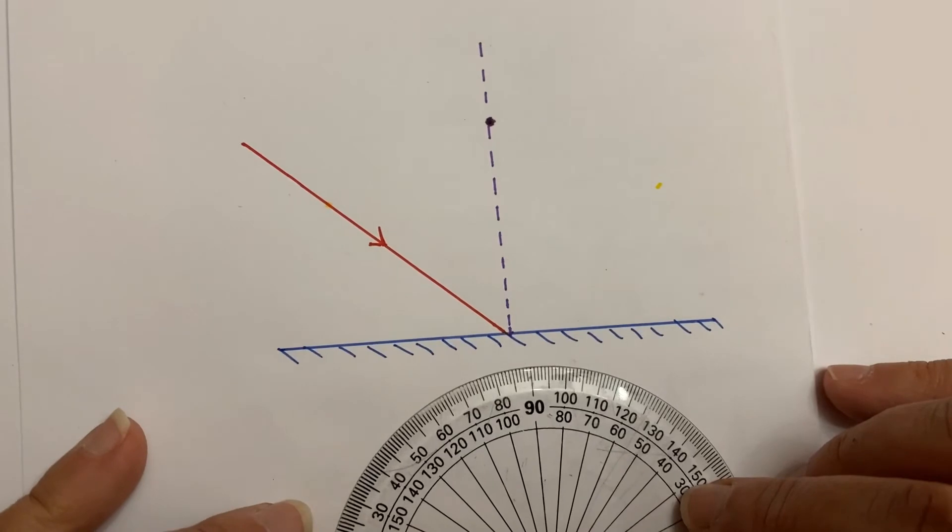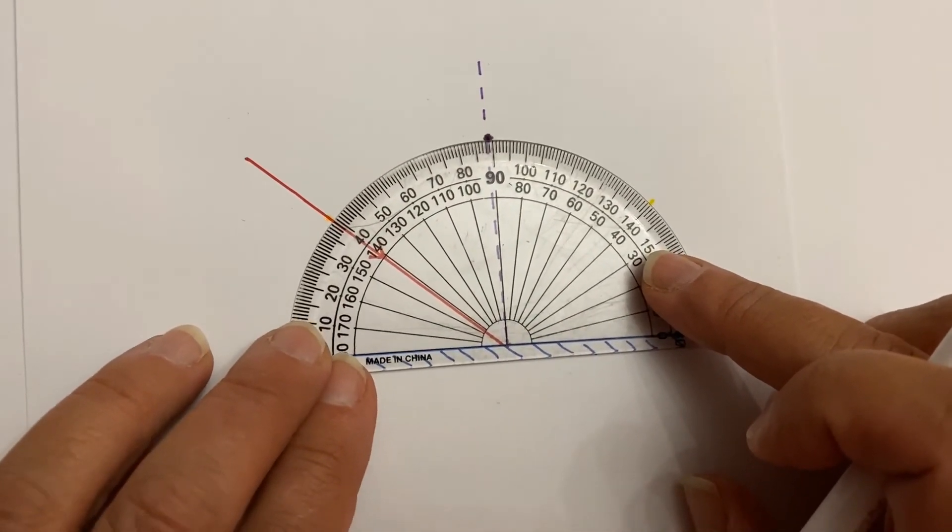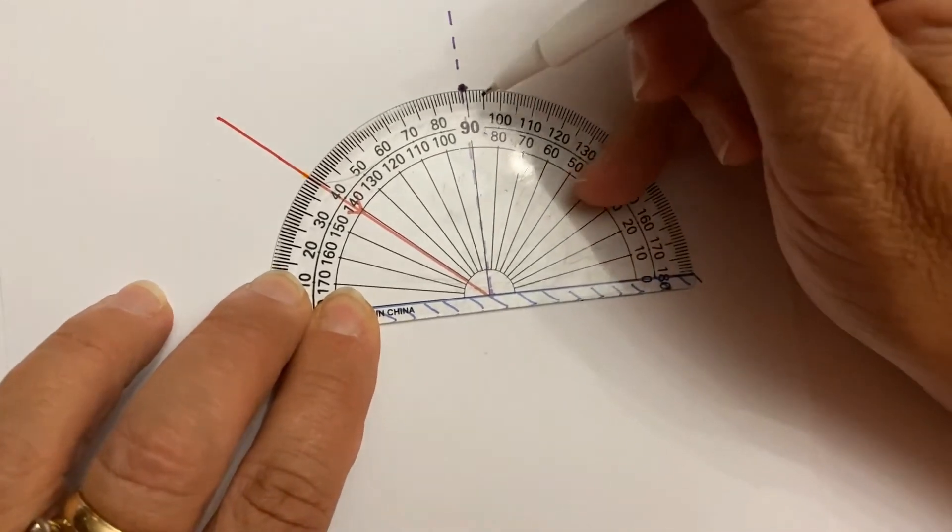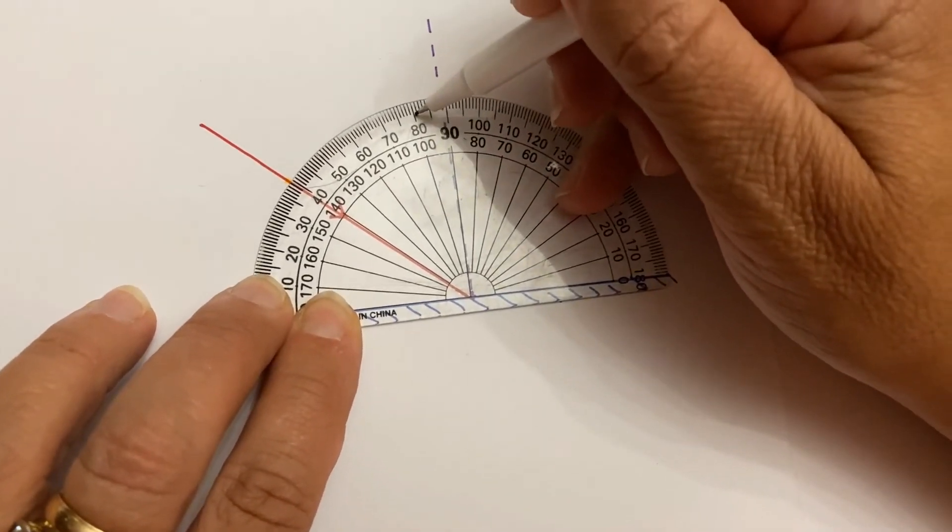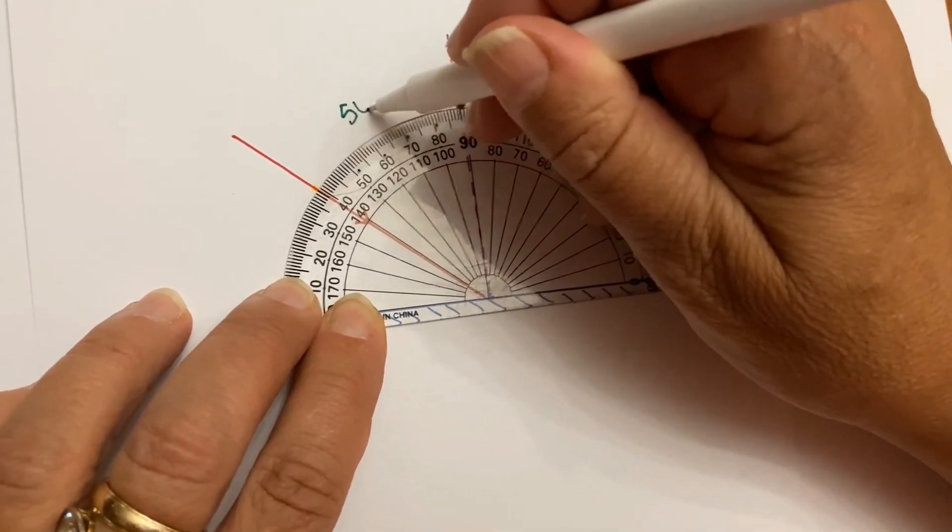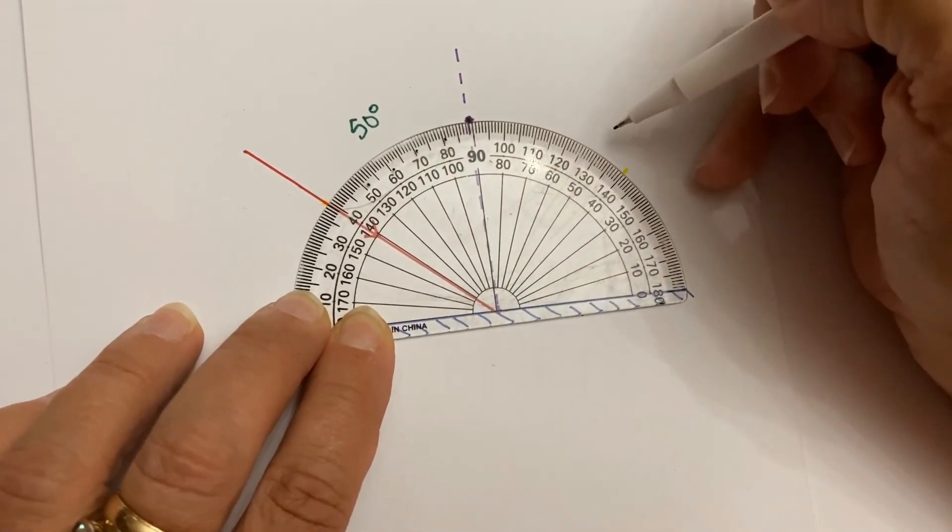In step three, we have to measure the angle of incidence. So we again have to use our protractor and we line it up so it's lined up with the normal and then we're going to count. 10, 20, 30, 40, there's 50 degrees here. So our angle of incidence is 50 degrees.